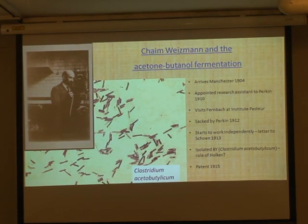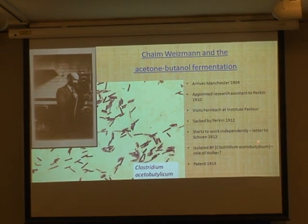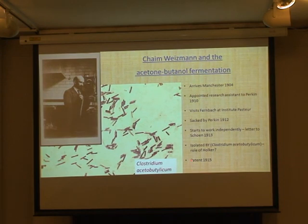Schoen wrote back from Paris saying sorry. It's very peculiar behaviour. So Weizmann had to isolate his own organism rather than use Fernbach's one. This is where the key part comes: he isolated an organism which he called BY, Bacillus acetobutylicum, and he isolated it from maize - not terribly scientific, he was just sniffing the ones that smelled of butanol and thought 'I'll keep that one.' But this organism was very good.